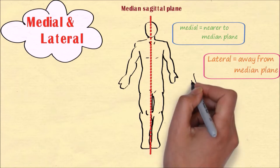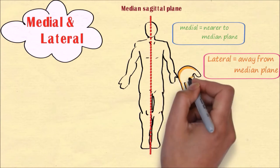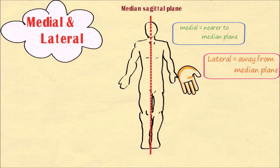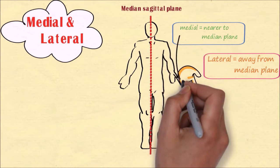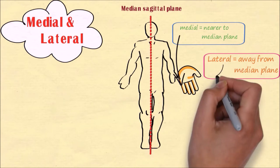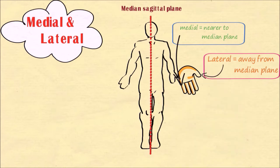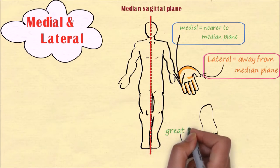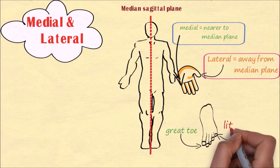For example, in normal anatomical position, the little finger lies medially whereas the thumb lies laterally. We can also say the little finger is medial to the thumb. Similarly, in the foot, the great toe lies medially and the little toe lies laterally.